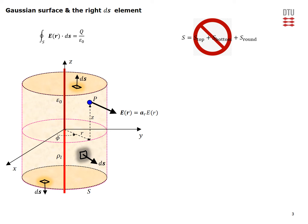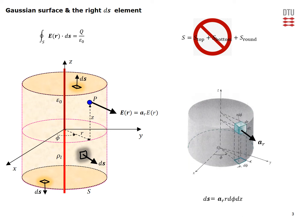Only the round lateral part contributes. Using the figure, the correct ds element for this part is the arc length r d-phi times dz, all in the outward radial direction.